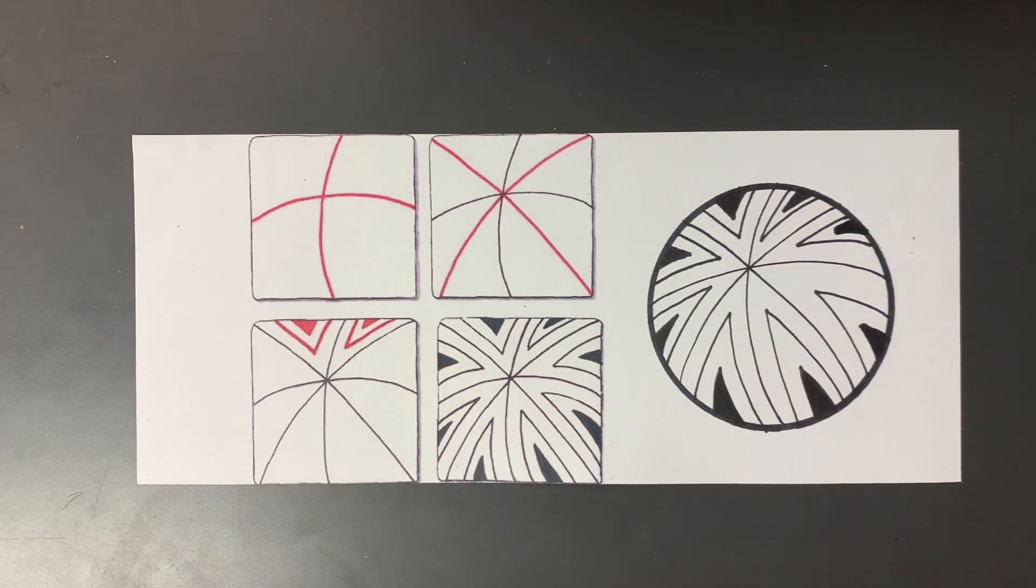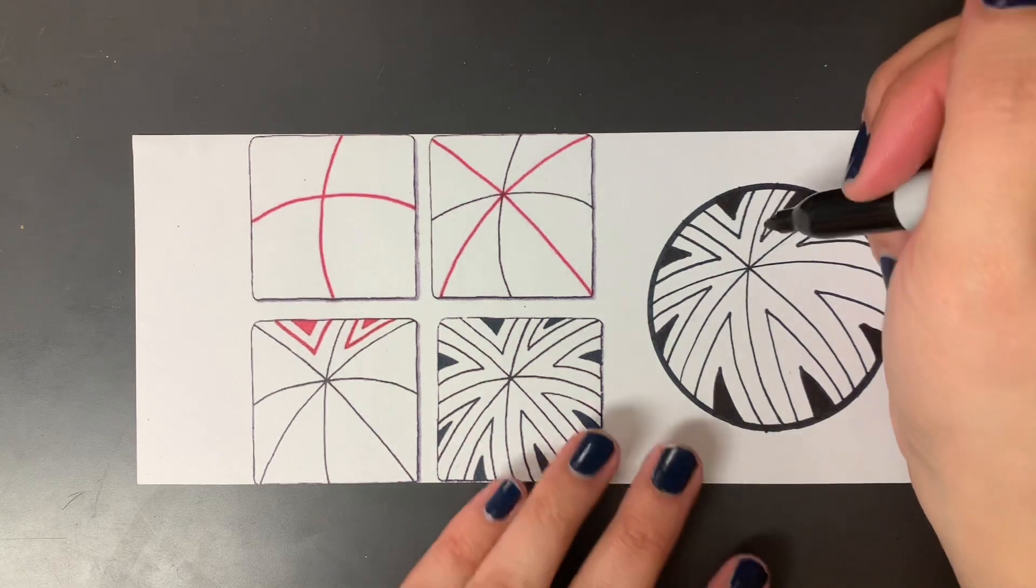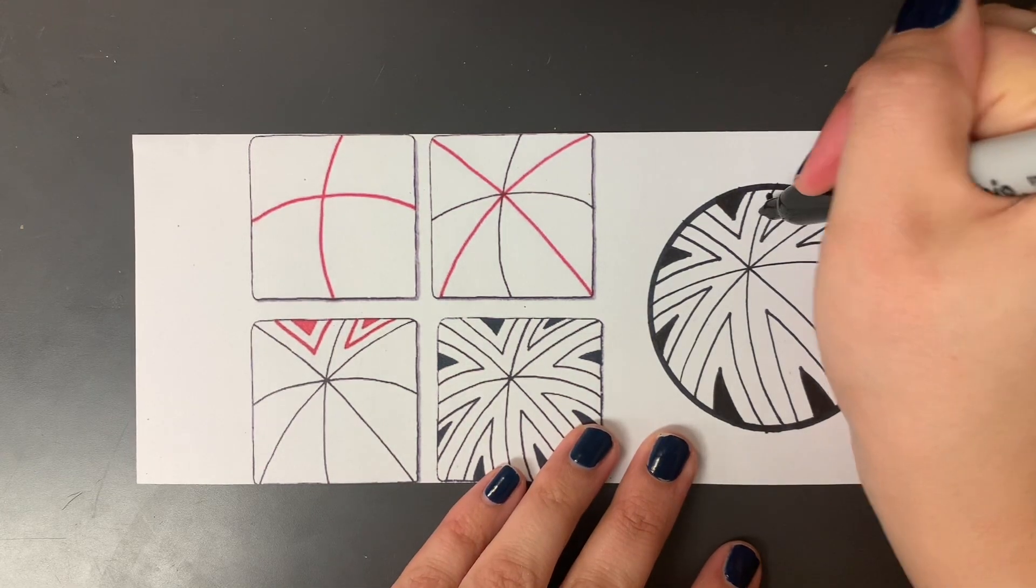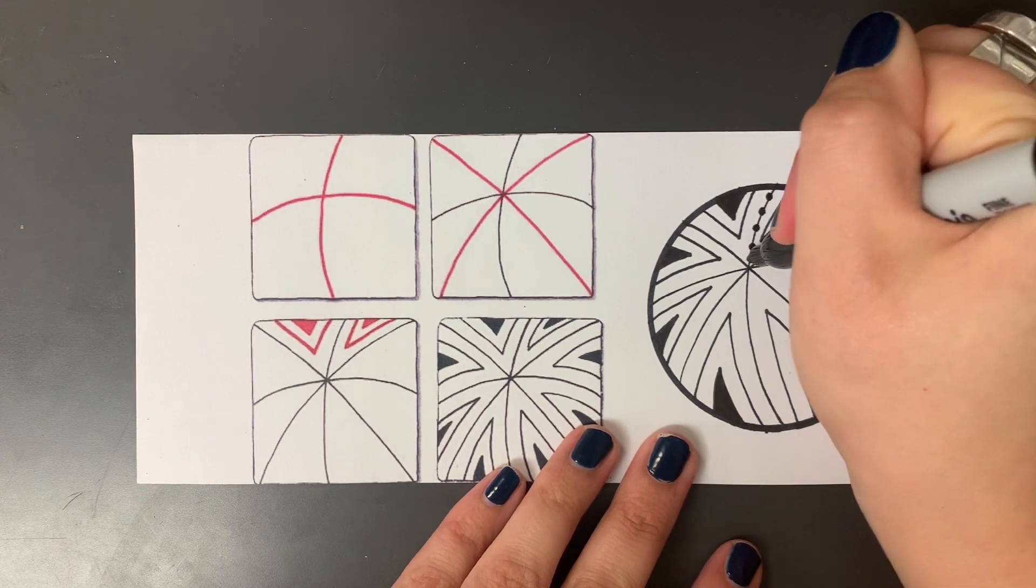Okay once you have the pattern you can go ahead and add extra things to it if you would like or you can leave it the way it is. If you want to make some of the lines bolder you could go ahead and do that. I'm going to just add a little bit of a design.